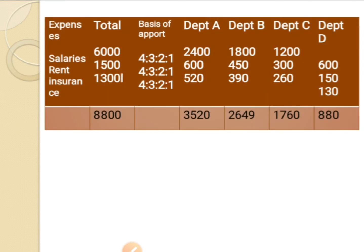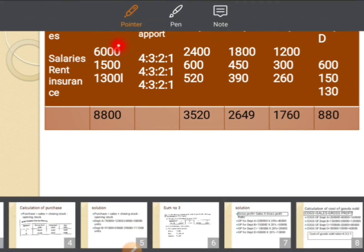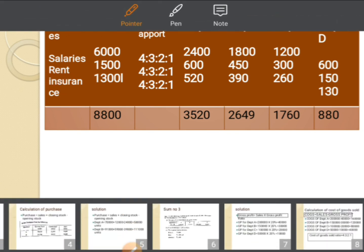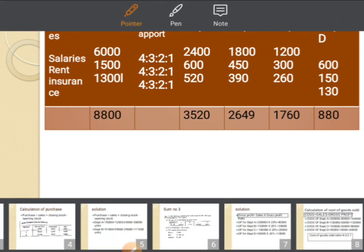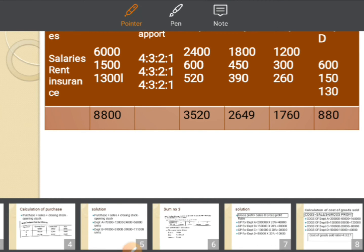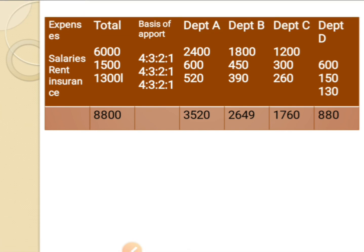Next we move on to the final calculation — the apportionment of expenses. Salary amount is 6,000, rent amount is 1,500, insurance is 1,300. There was a small mistake noted but it is 1,300. The basis of apportionment is the cost of goods sold ratio 4 : 3 : 2 : 1.